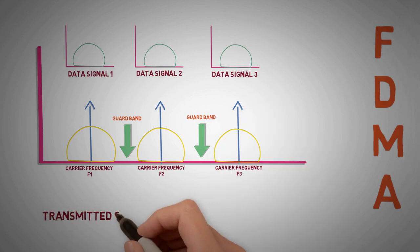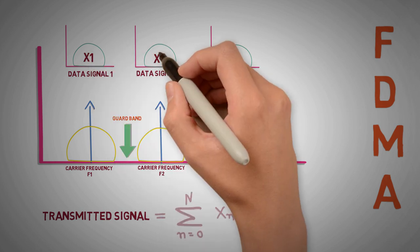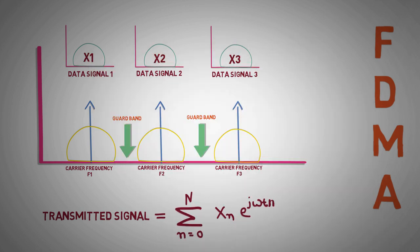We can represent this transmitted signal in the equation form as shown here, where summation of individual symbol multiplied with different carrier frequencies and transmitted at radio frequencies.